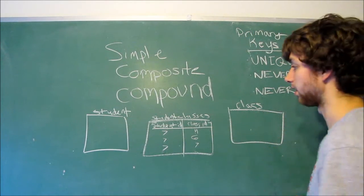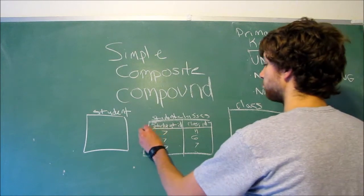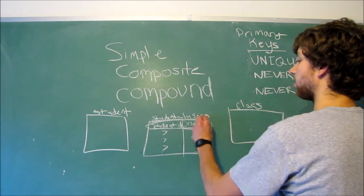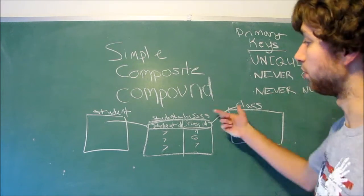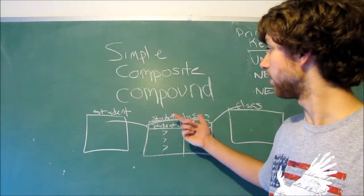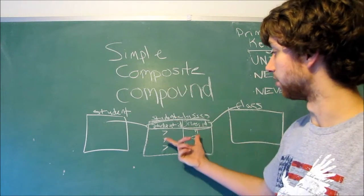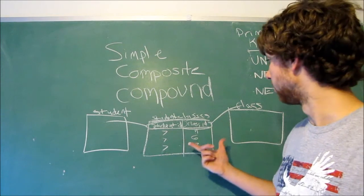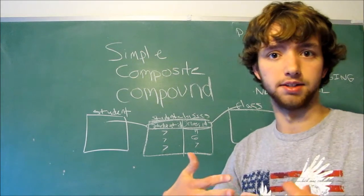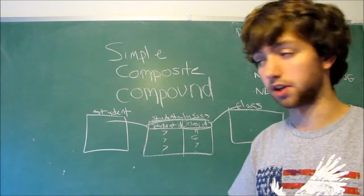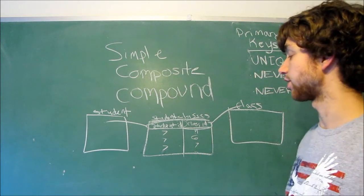So, the combination has to be unique. And, these are also both foreign keys which point to another table. So, both of them are keys. And, the primary key is compounded because we have the student ID and the class ID as one giant ID. Or, one giant key, I should say.